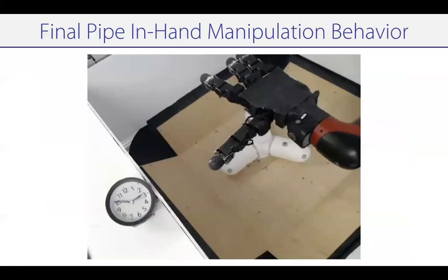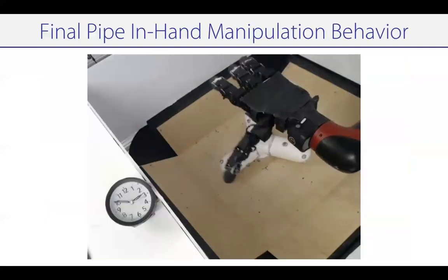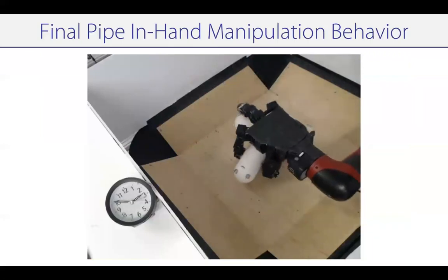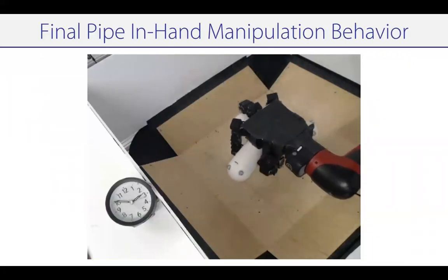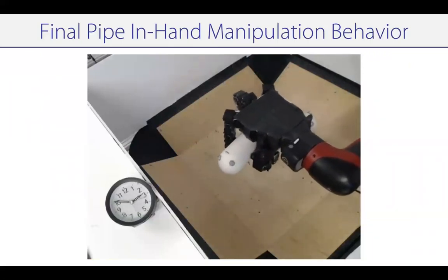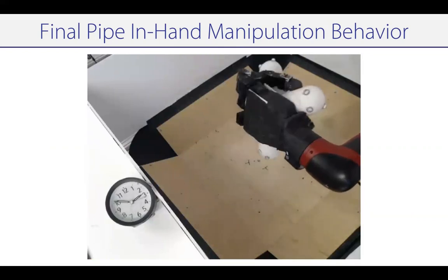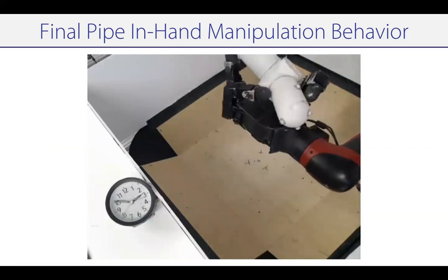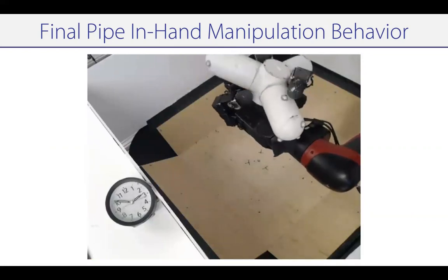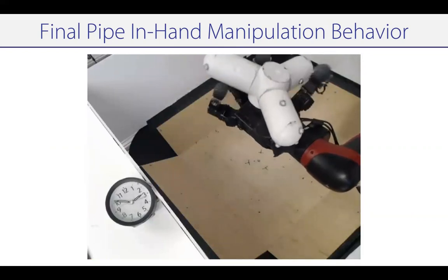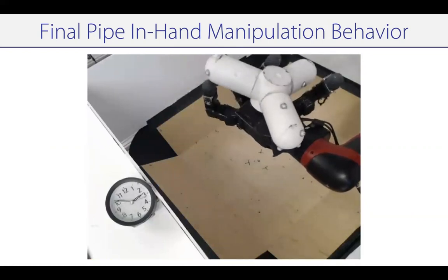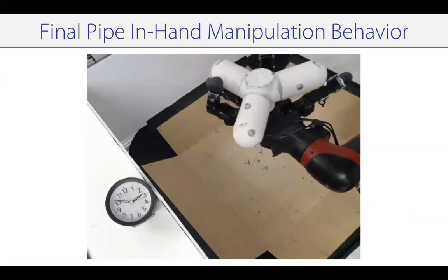The final learned behavior looks something like this. The object is successfully picked up, flipped over, and then there's fine-grained finger manipulation and finger gating to get it into a particular position and orientation.